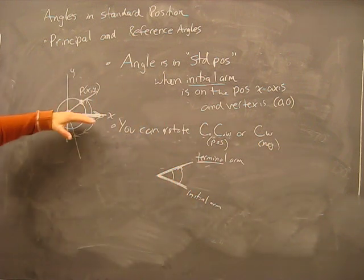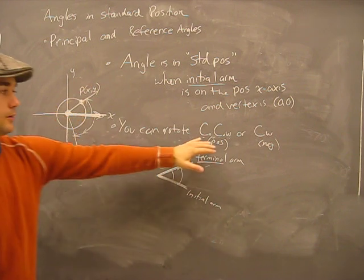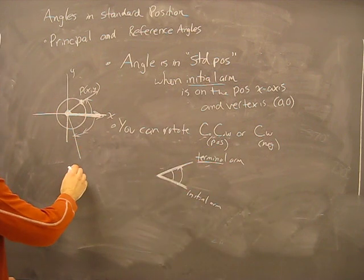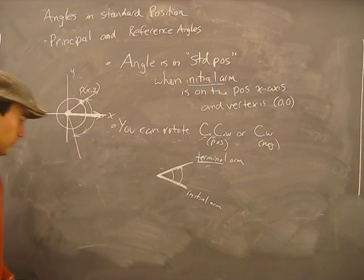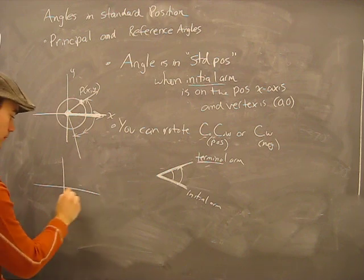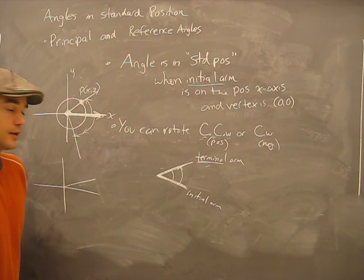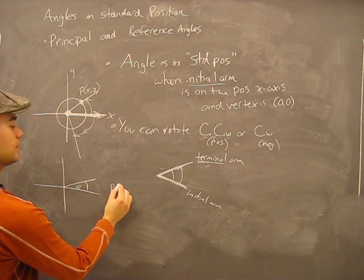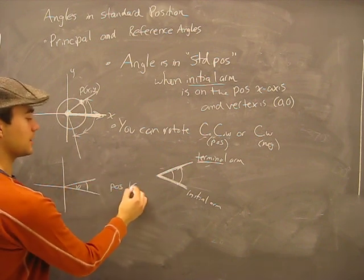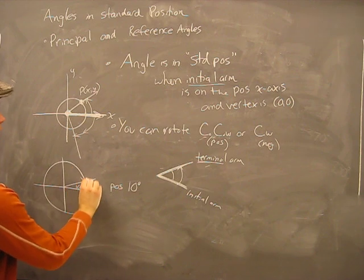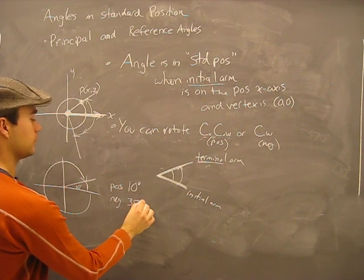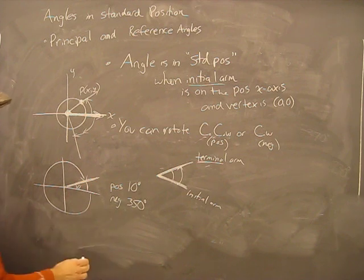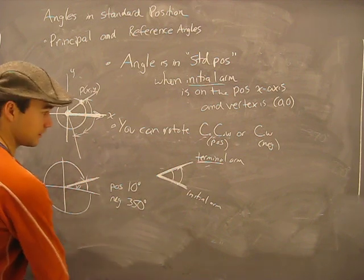Maybe think of it like this: up is positive, down is negative. Counterclockwise will go up, clockwise will go down. You can also get the same looking picture by using a positive or negative angle. For example, if this is 10 degrees, this picture is drawn by positive 10 degrees, but it's also drawn by going negative 350 degrees, because there are 360 degrees in the circle. So this 10 degree line can be made in two different ways. Put that in your back pocket for now.